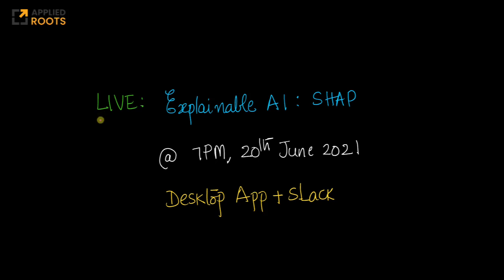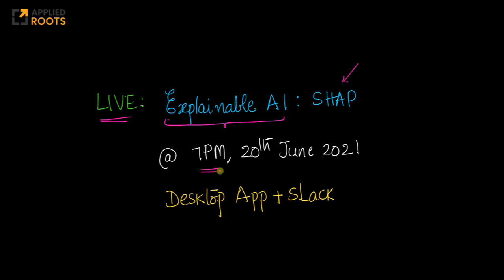Hi friends, our next live session for all of our AI course enrolled students is the second live session in this series of live sessions related to explainable AI. In this live session, we will cover a very popular and state-of-the-art technique called SHAP. This live session will be at 7 pm on the coming Sunday, which is the 20th of June.